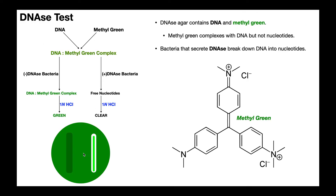Now that we understand a little bit of what DNases are, let's talk about the DNase agar — this is the agar that we run the test on. DNase agar contains both DNA and methyl green. DNA is really just the potential substrate if the bacteria express DNase. The methyl green is an indicator — it'll tell us where the DNA is. When you put the DNA and the methyl green together, they form a complex. This DNA–methyl green complex turns green, and methyl green is only going to be green when it's complexed with that DNA. So wherever you see green on the agar, that's indicative that DNA is also there.